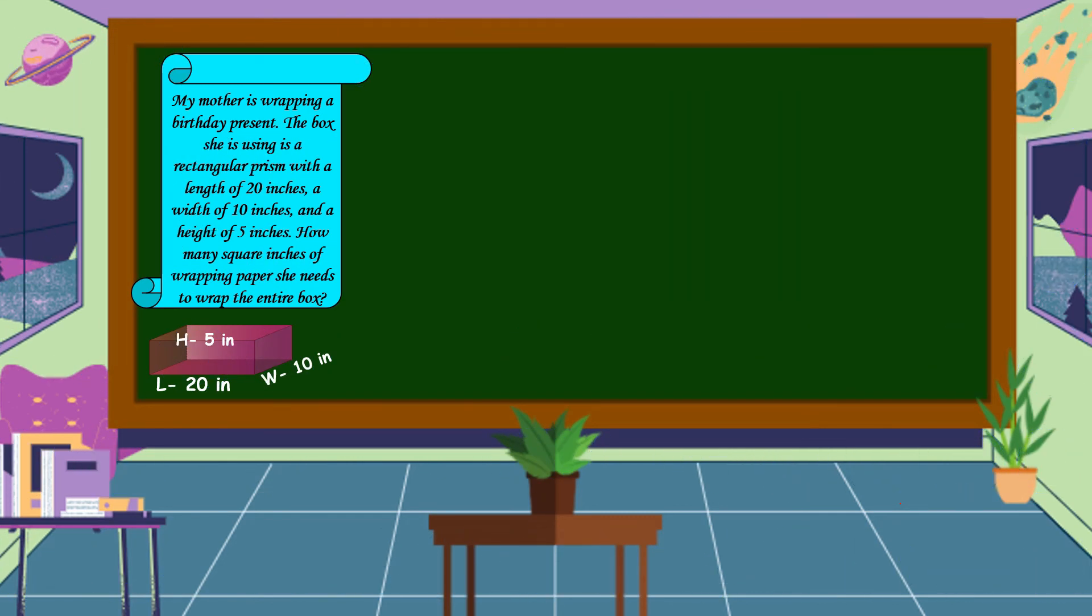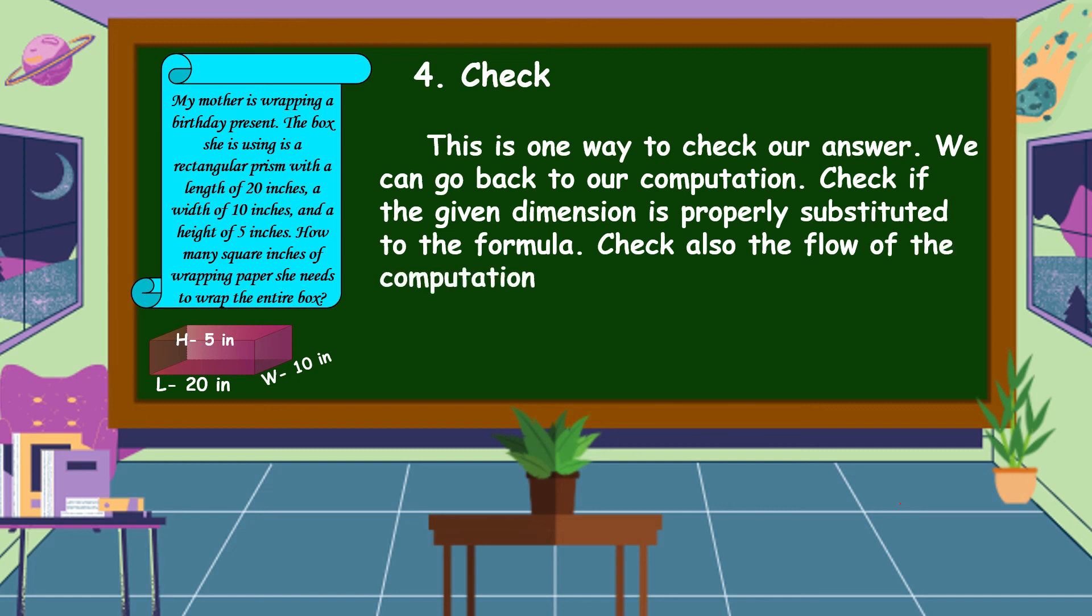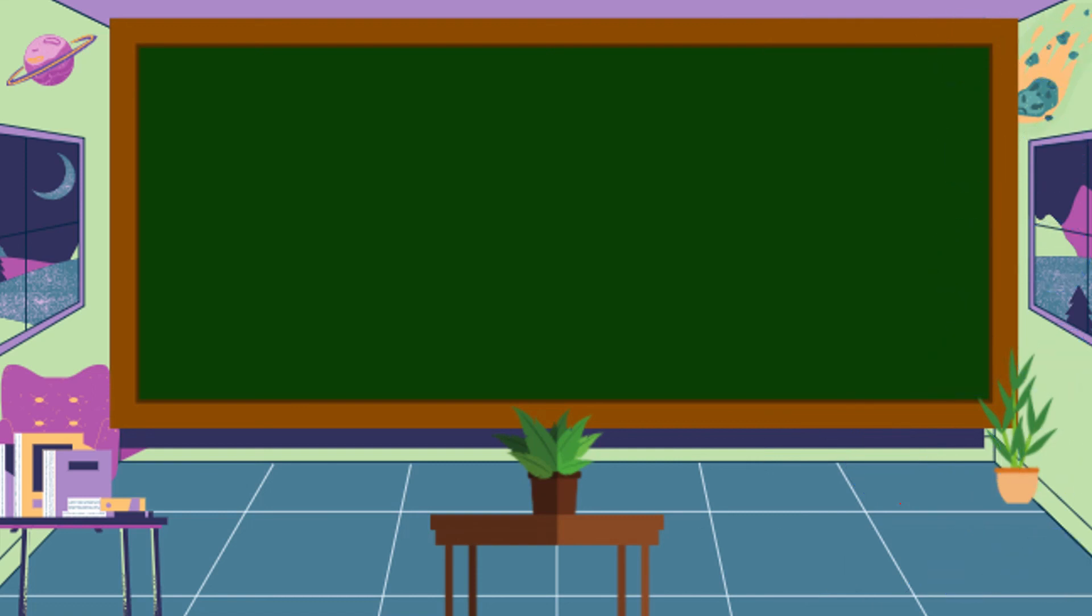Alright, we have already an answer to our problem. What is the last step? Yes, you are right. The last step is we are going to check. How are we going to check? This is one way to check our answer. We can go back to our computation. Check if the given dimension is properly substituted to the formula. Check also the flow of the computation. I hope that you understand our lesson for today and thank you for watching.